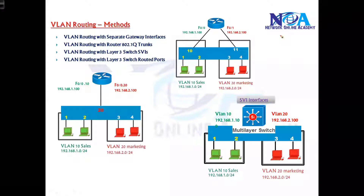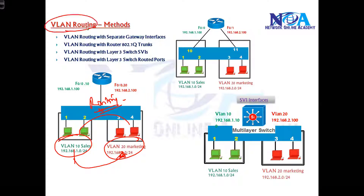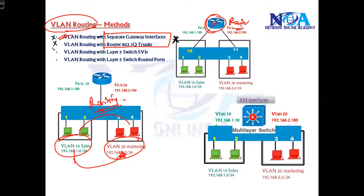There are different methods to do VLAN routing. If you want users of one department or one VLAN to communicate with users of another VLAN, you need some kind of routing. We can use a physical router device — these are the first two scenarios. These are legacy methods: the first one is no longer used at all, but the second method using a router and dot1Q trunks may still appear in some scenarios.